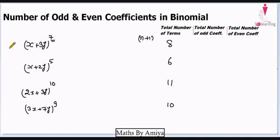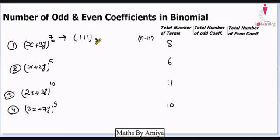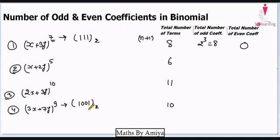We can apply the previous conditions to question 1. We cannot apply them to question 2 or question 3 because one coefficient is even. We can apply them to question 4. For question 1, 7 in binary is 111 — there are three 1's, so total number of odd coefficients is 2³ = 8. Total coefficients are 8 and odd coefficients are 8, so there are no even coefficients. For question 4, 9 in binary is 1001 — there are two 1's, so the number of odd coefficients is 2² = 4. So even coefficients = 10 minus 4 = 6.